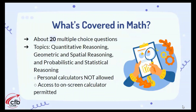There are two sections: an English section and a math section. In the math section, there are 20 multiple-choice questions. Some of the topics covered include quantitative reasoning, geometric and spatial reasoning, and probability and statistics. No personal calculator is allowed on the TSI, but there is an on-screen calculator you are allowed to use.